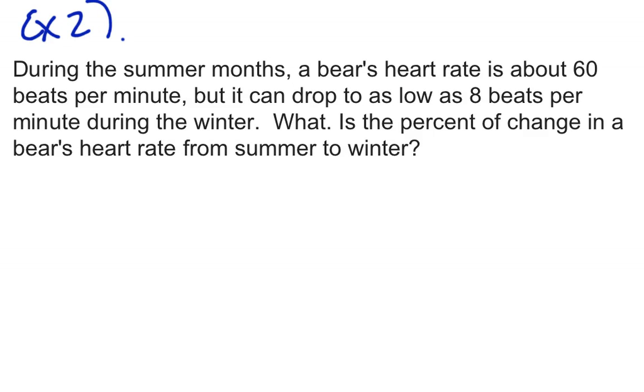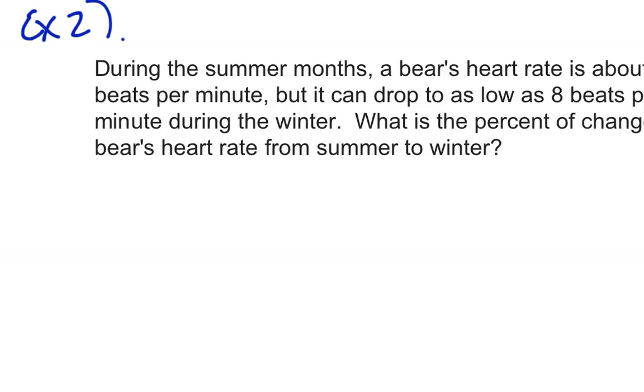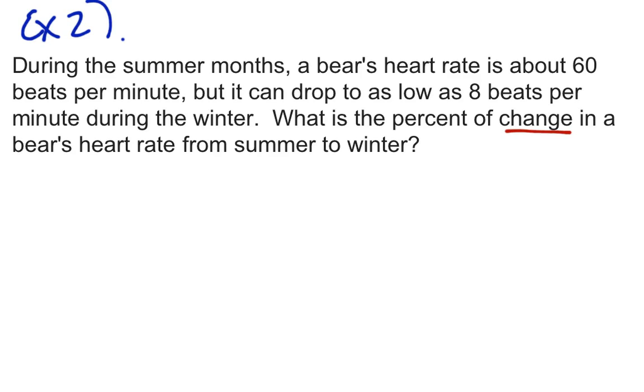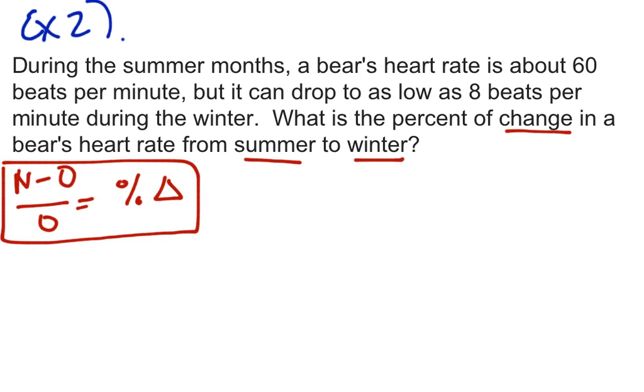So example two. During the summer months, a bear's heart rate is about 60 beats per minute. But because of hibernation, it can drop to as low as 8 beats per minute during the winter. What is the percent of change in a bear's heart rate from summer to winter? So we want to figure out the percent of change. So I'm going to use the N minus O over O method again. Equals my percent change. That triangle means change. So there's my little shortcut cheater notes. And then I'm going to label my new. So we're trying to figure out what changed from summer to winter. So his original was whatever his heart rate is in the summer. So that's 60. So that's his original. And then his new amount is his 8 heartbeats.